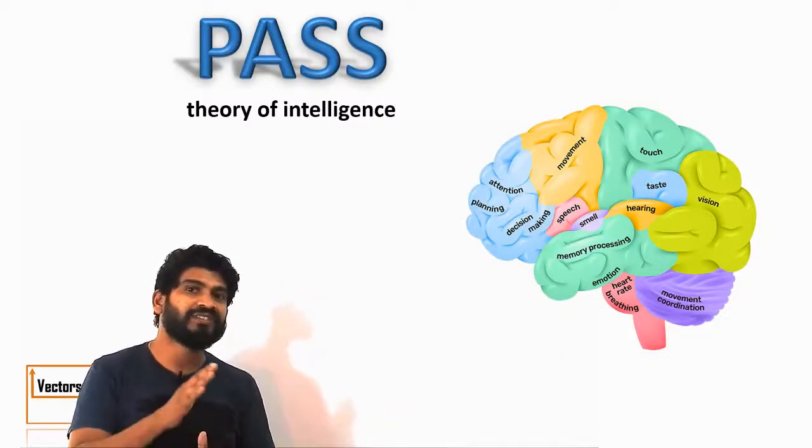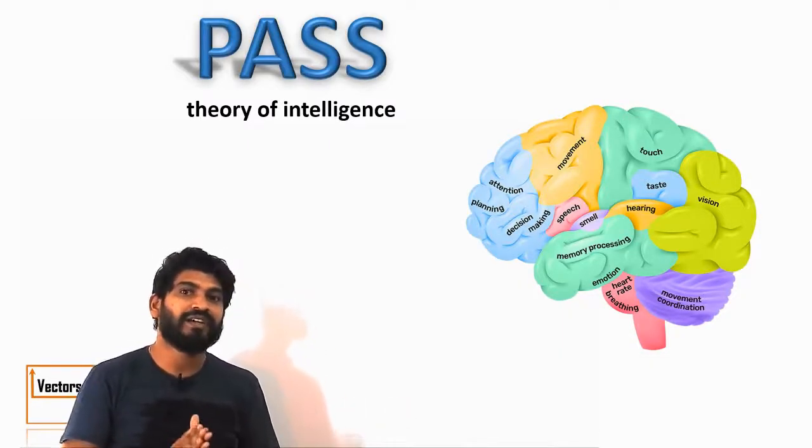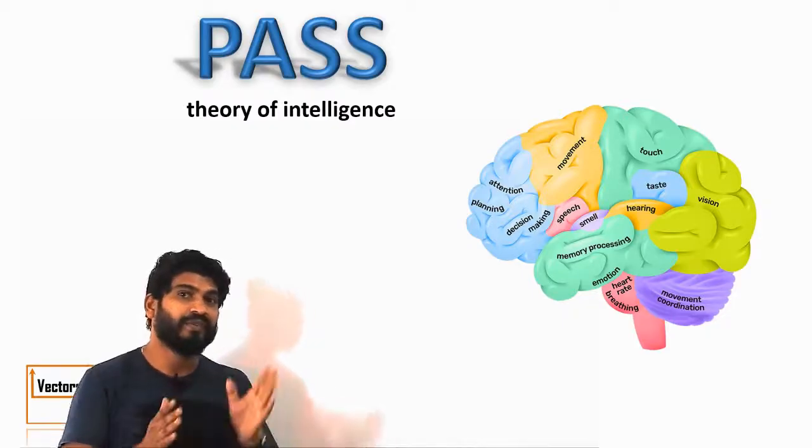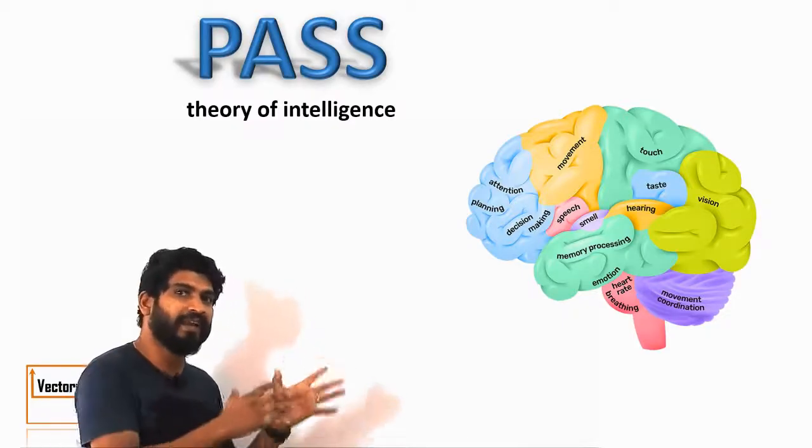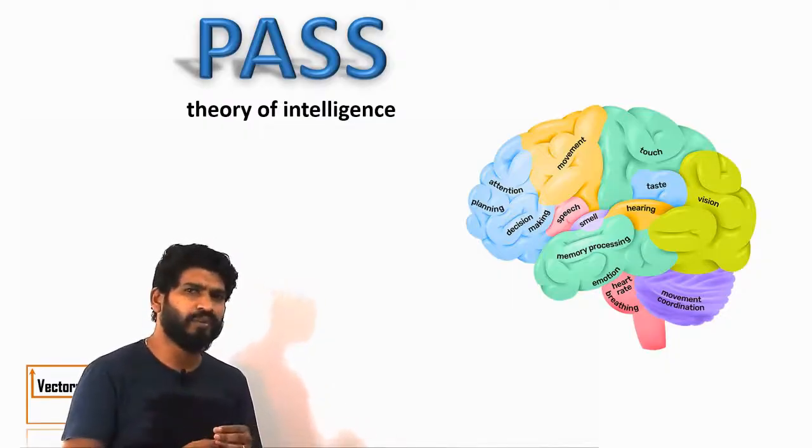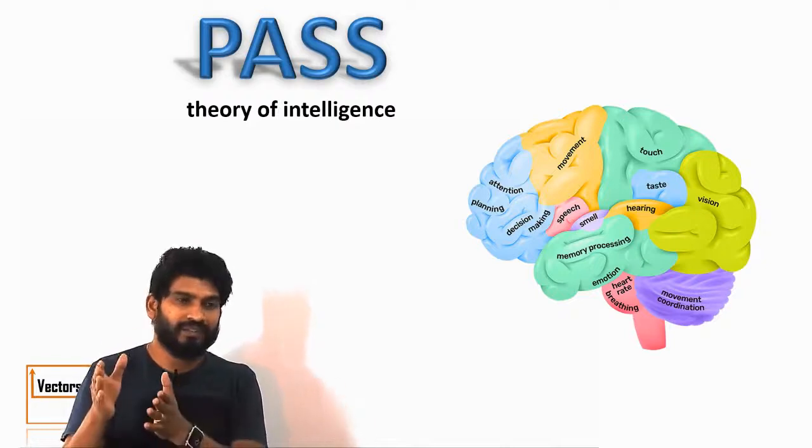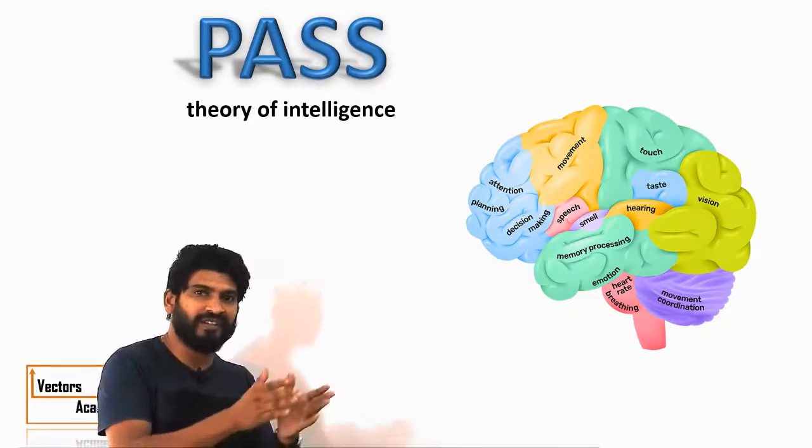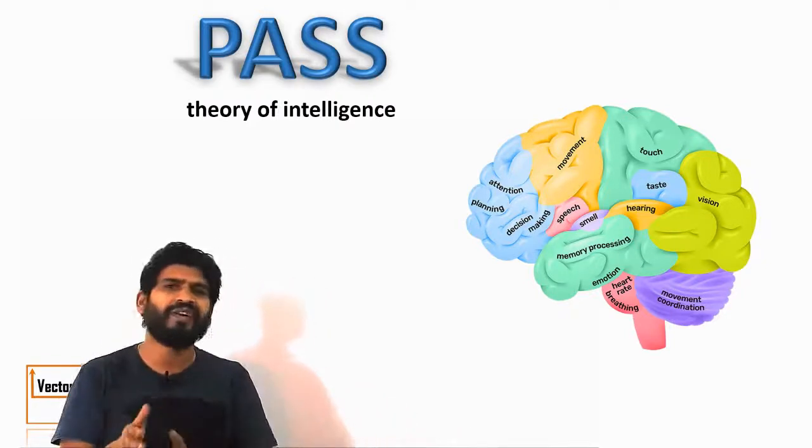But that theory was not a factor theory, it was a neuropsychological theory which stated that the brain functions all these type of intelligences or all these type of processes using its different parts. So one part is responsible for one type of function, the other part is responsible for another type of function and so on.